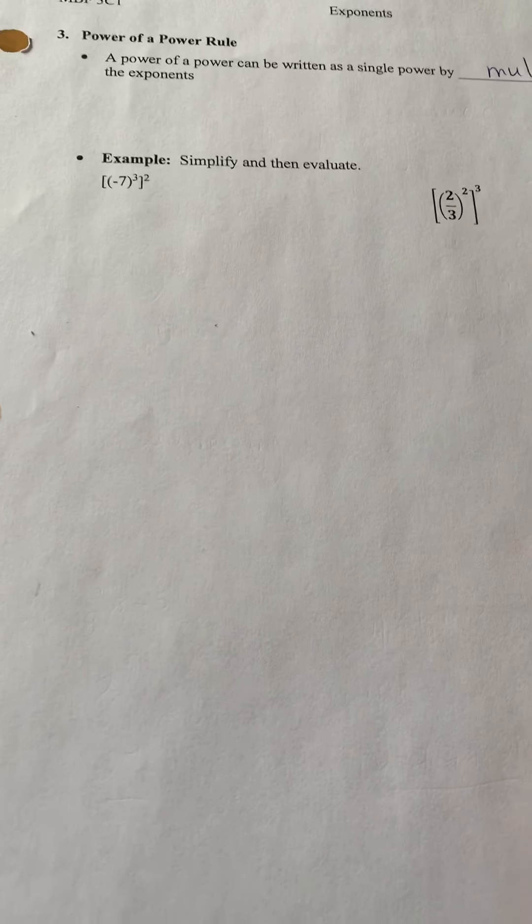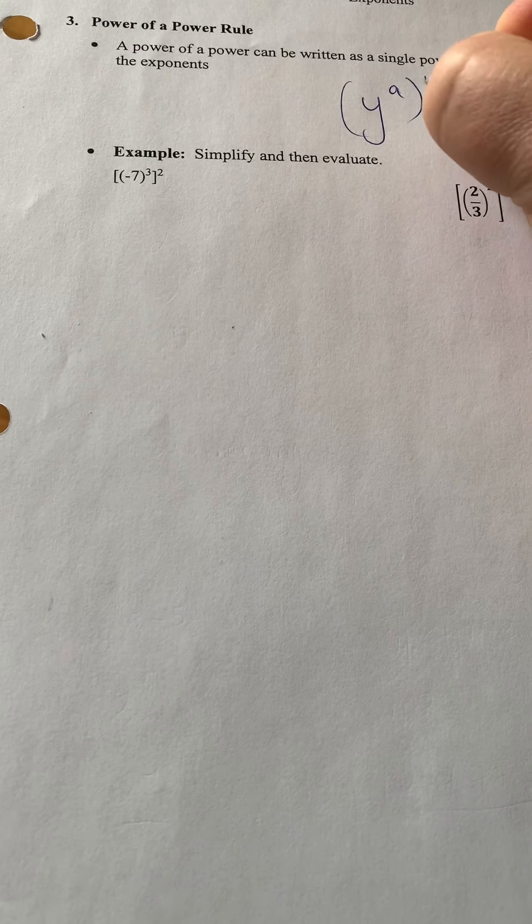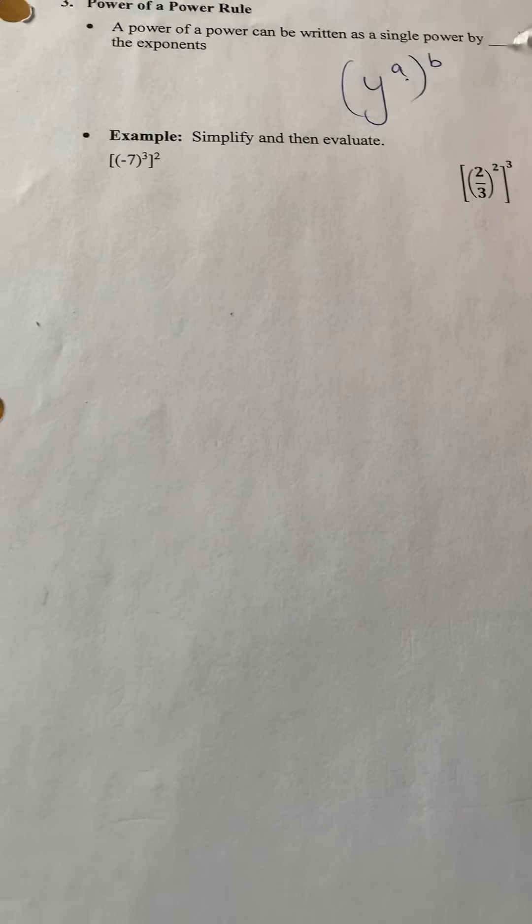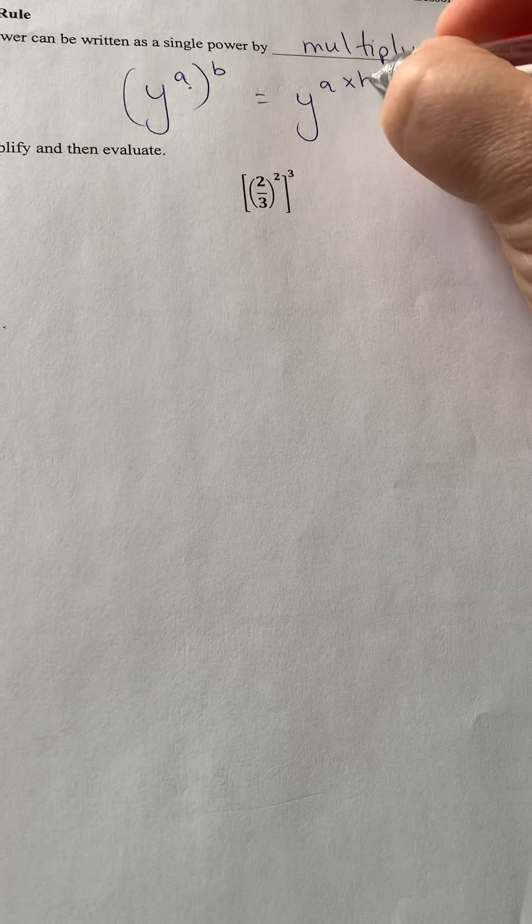So simplify, then evaluate. So to give you an example, here we have y to the power of a. If we have a power on a power, that's going to be the same as y to the a times b.